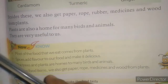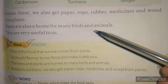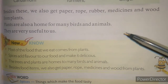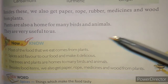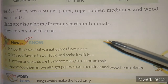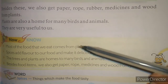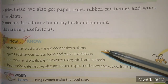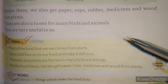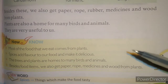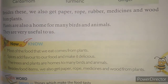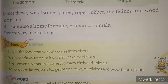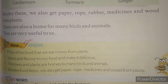Plants are not only important for human beings but also for birds and animals. Many birds and many animals live on the plants. Animals like monkeys and squirrels, and many more animals live on the trees. Birds also live on trees and they make nests on the trees. So we can say that plants are very important for all living creatures.